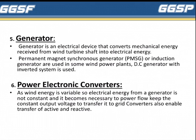Next is the Generator — an electrical device that converts mechanical energy received from the wind turbine shaft into electrical energy. A permanent magnet synchronous generator or induction generator is used in some wind power plants. A DC generator with an inverter system is also used.